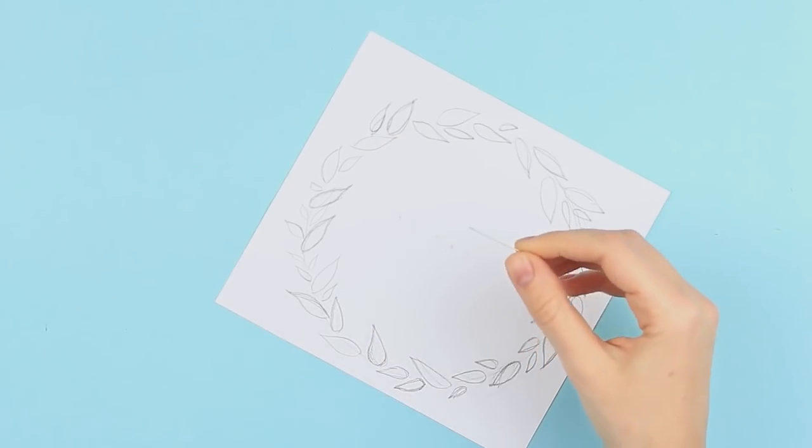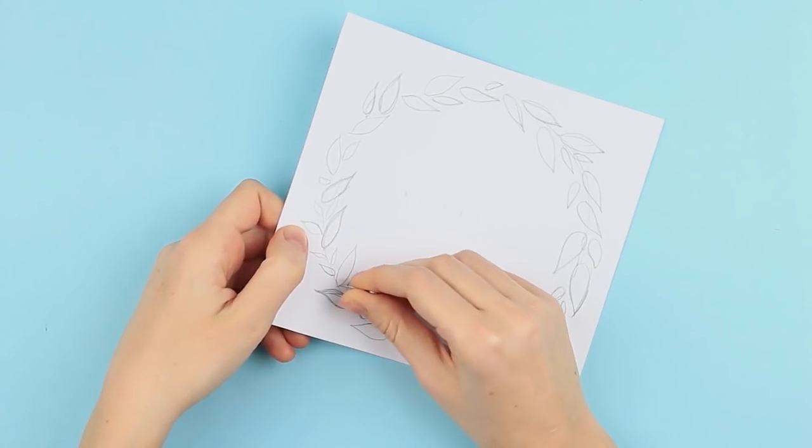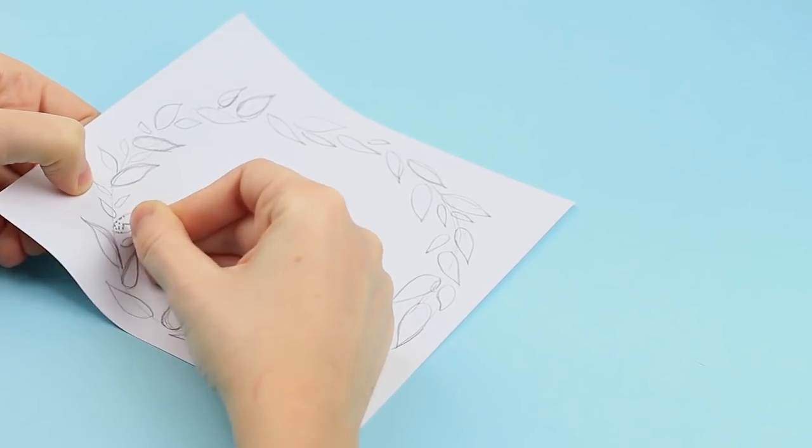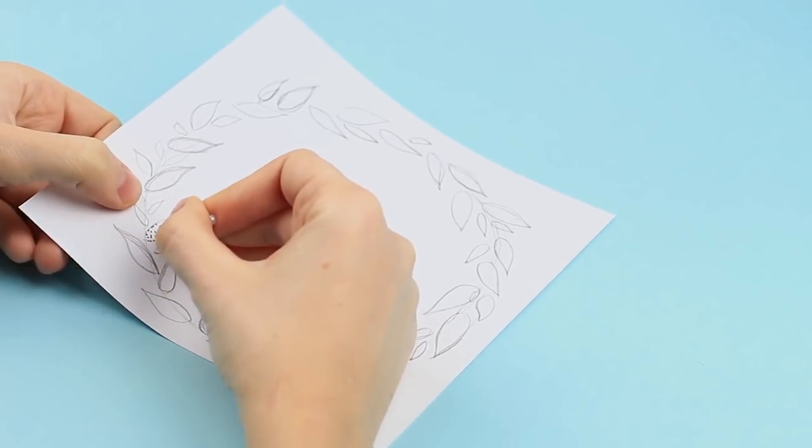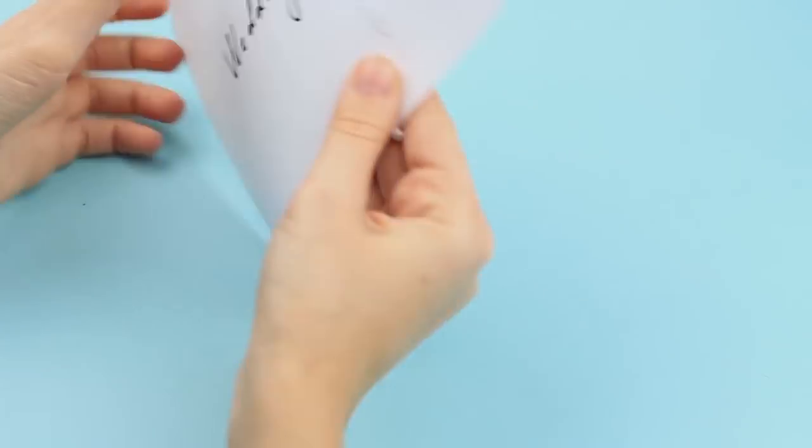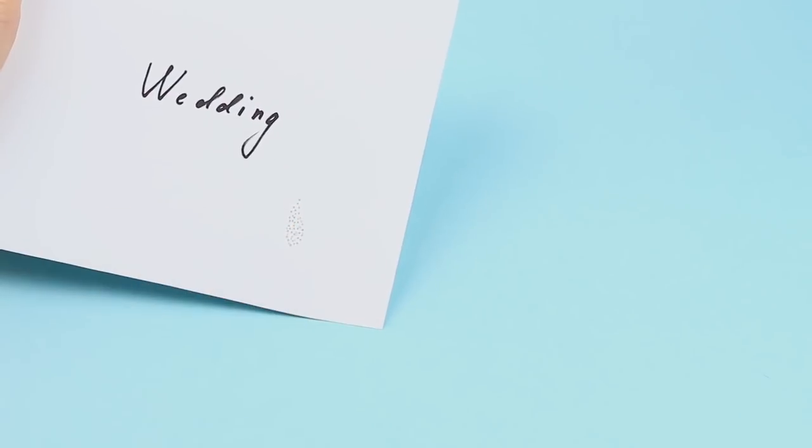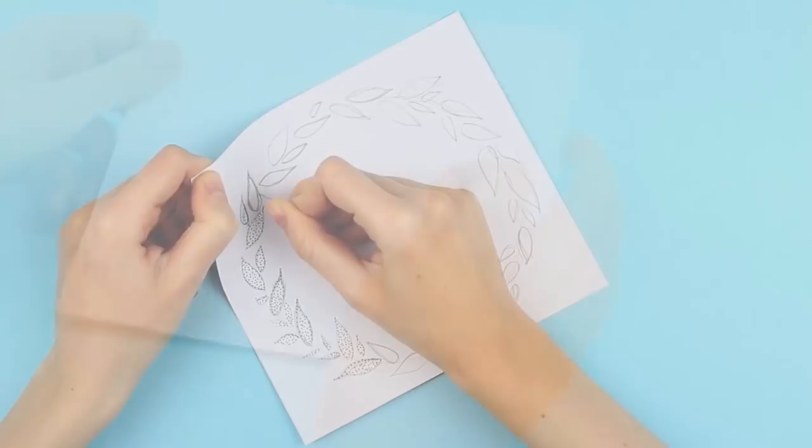Now take a pin and start pricking each leaf. You can prick the outline first, then the inner part or vice versa. There is an embossed leaf on the front side. Continue.